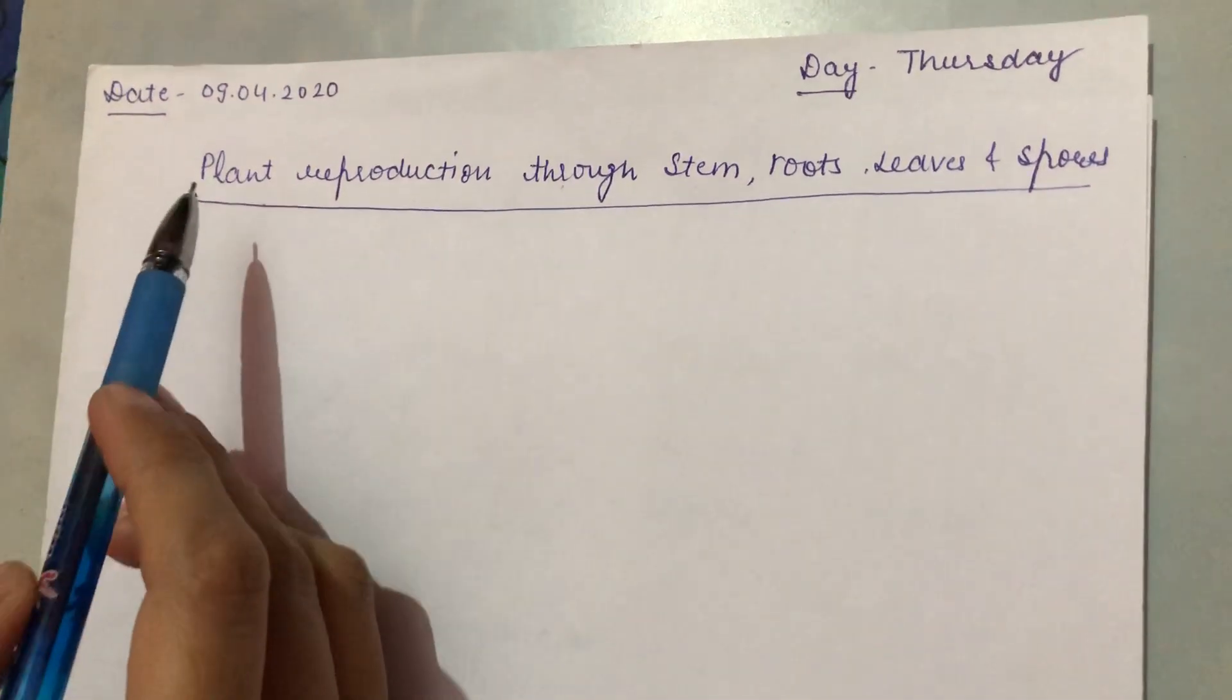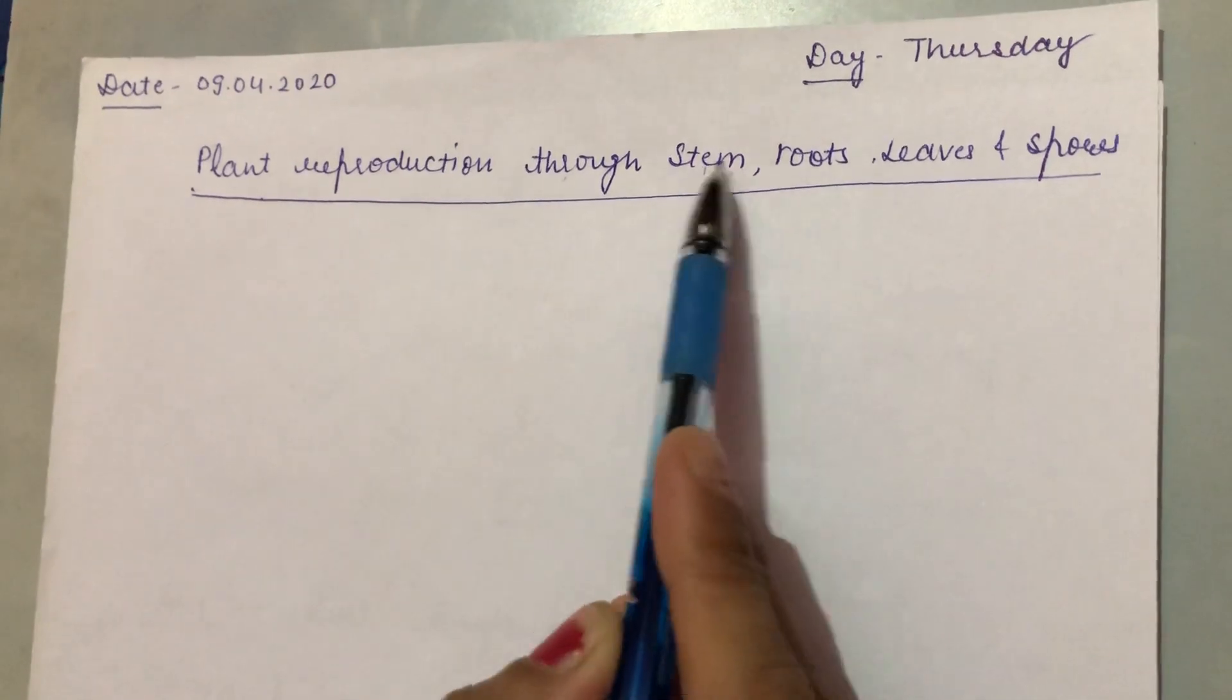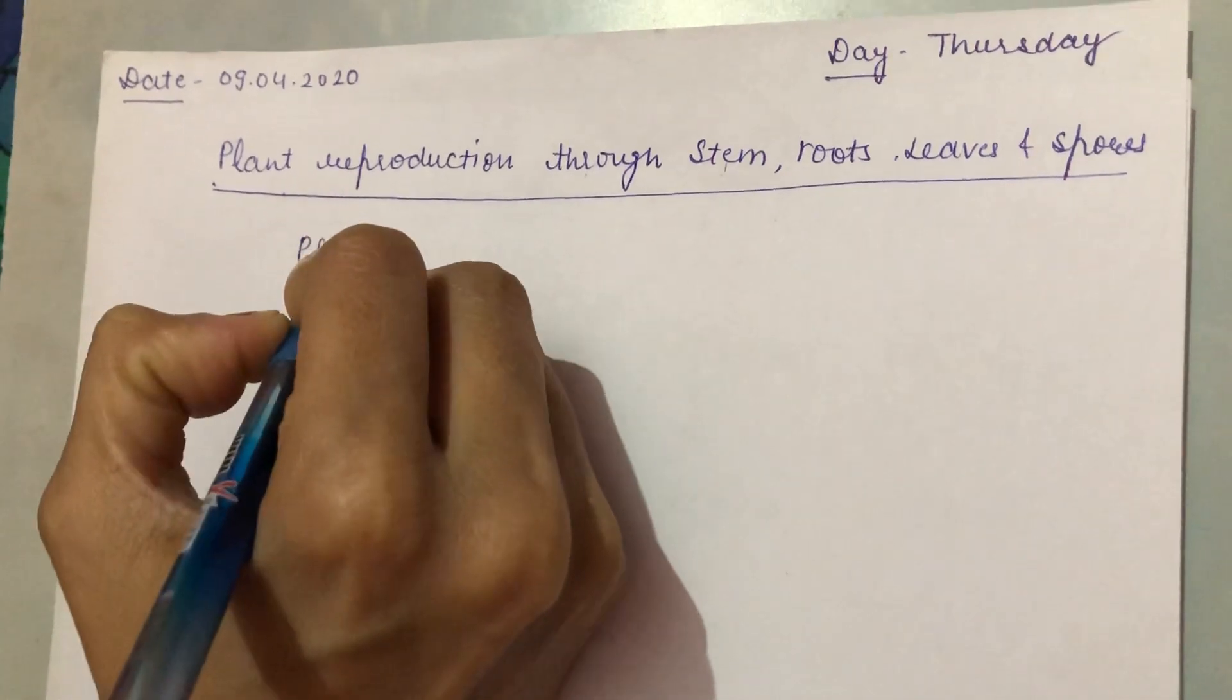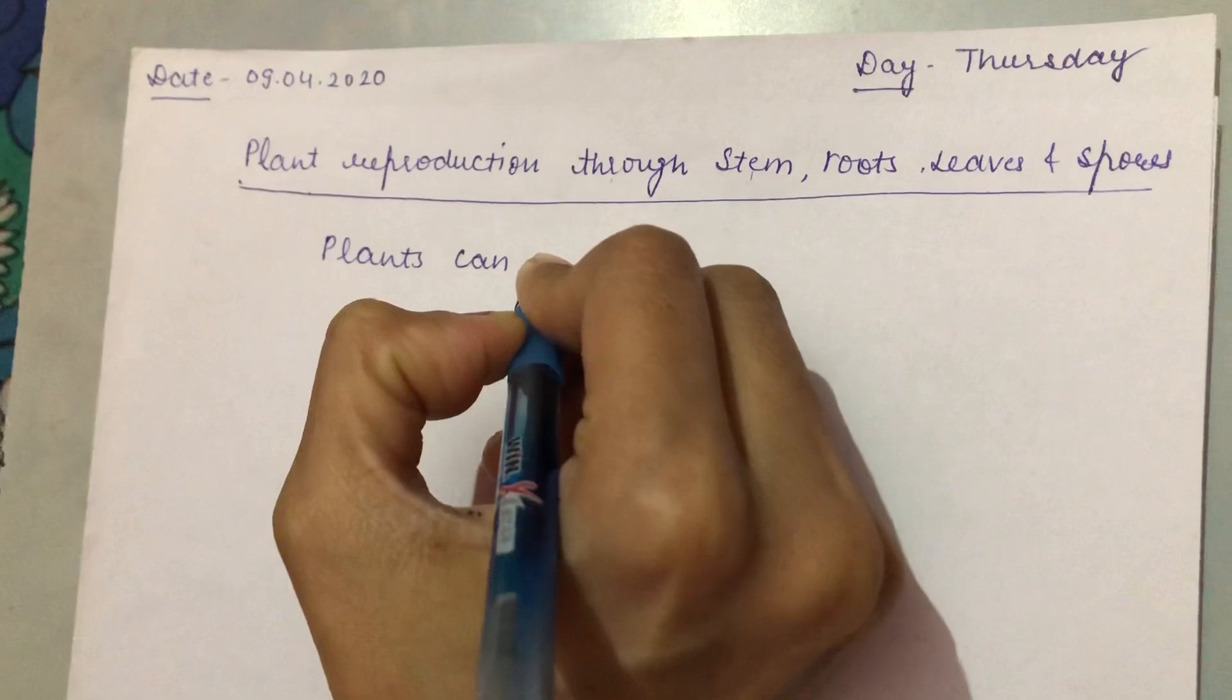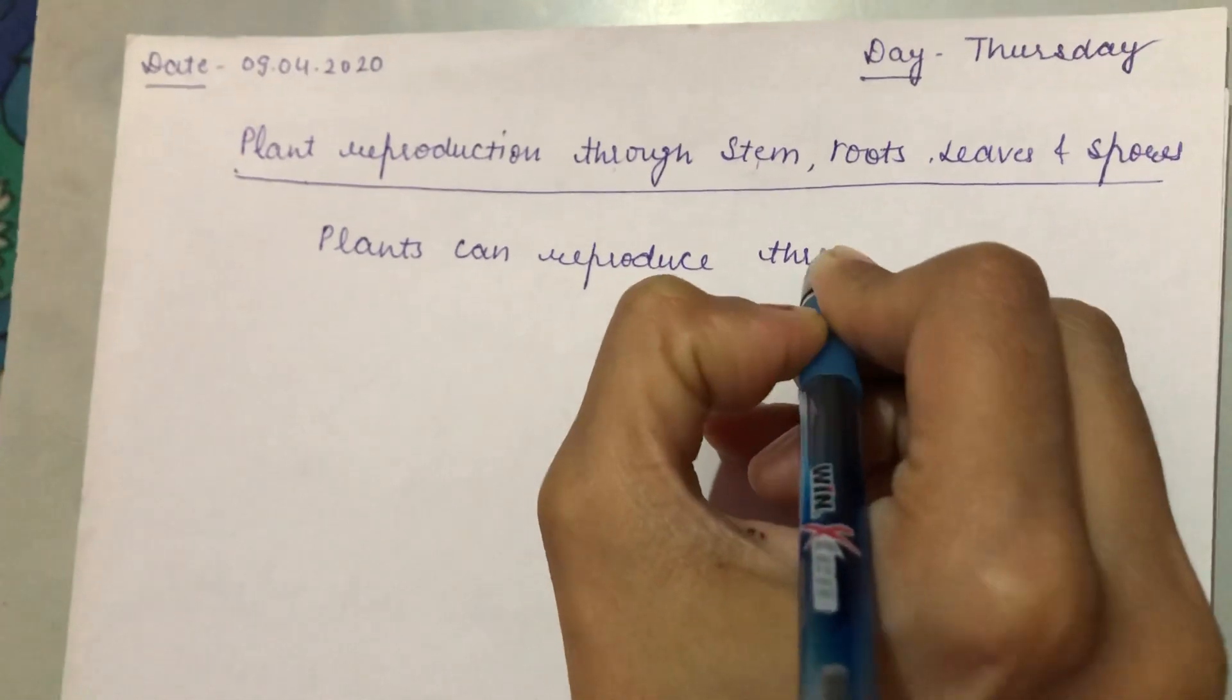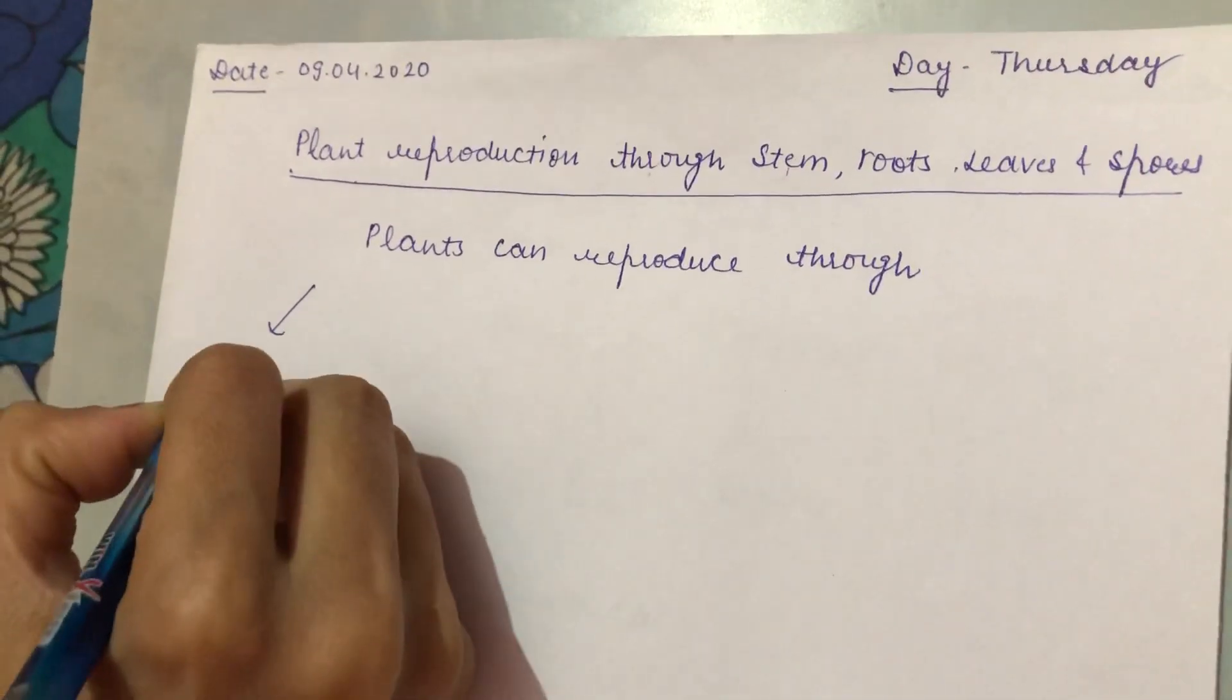Good morning, major students. Today we will discuss plant reproduction through stem, roots, leaves and spores.